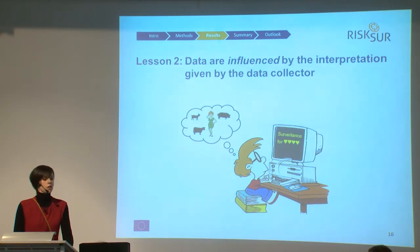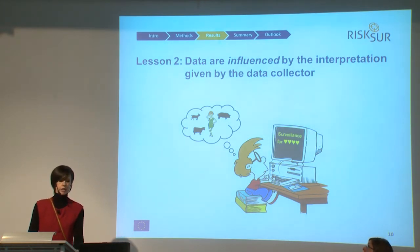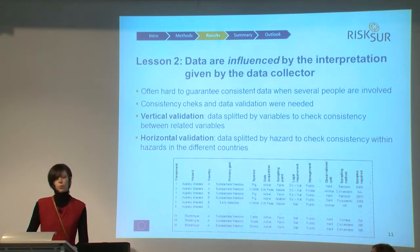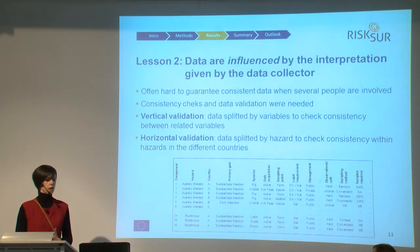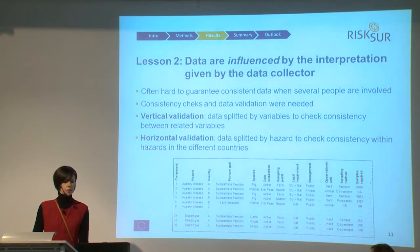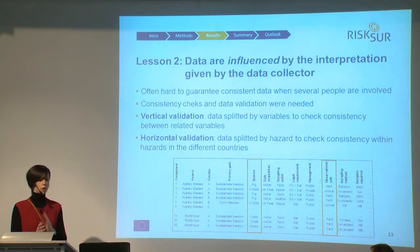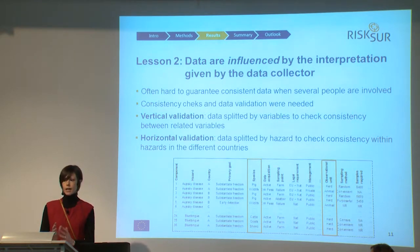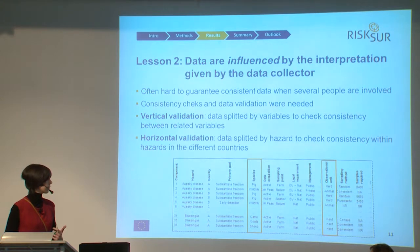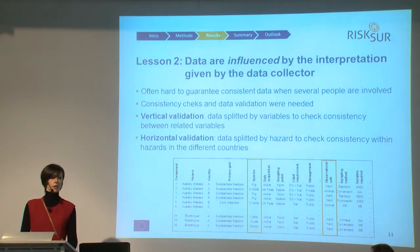The second lesson is that data is influenced by the data collector — which seems obvious, but it's important to keep in mind. Having so many people helping in data collection, we expected some degree of inconsistency. Therefore we performed two levels of data validation. The first, called vertical validation, checked that related variables had consistent values — for example, if the species under surveillance was wildlife, we checked that the observational unit was animal and not herd.